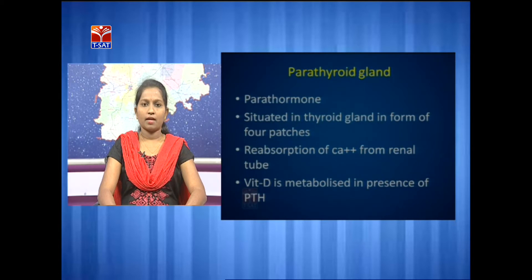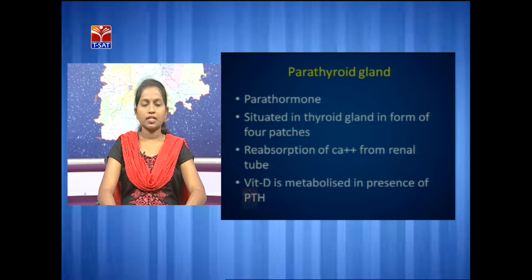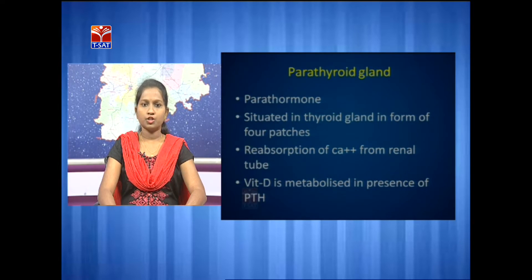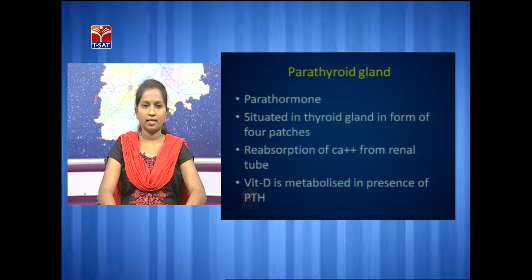The next gland is the parathyroid gland. This gland is situated behind the thyroid gland in the form of four patches. It secretes a hormone called parathyroid hormone, which helps in the reabsorption of calcium ions from the renal tubule and various cells of the body. This hormone also helps in the production and metabolism of vitamin D.